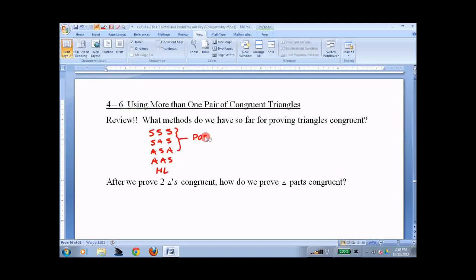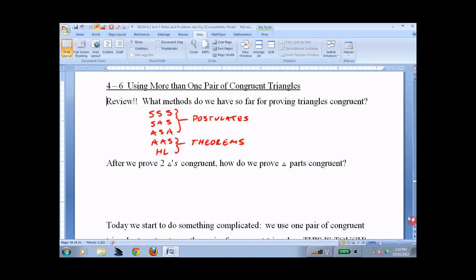These were postulates. These were theorems. You don't need to know that but it's not a bad idea. You remember that we have to prove these sometimes. And after we prove that two triangles are congruent, how do we prove that triangle parts are congruent?